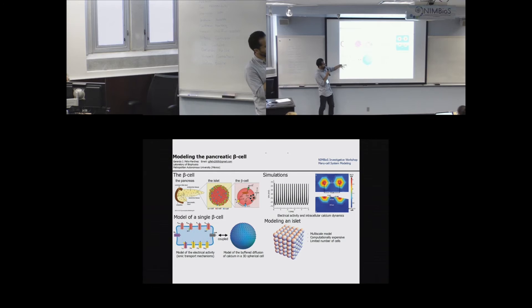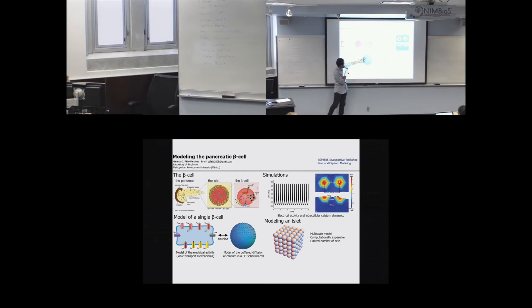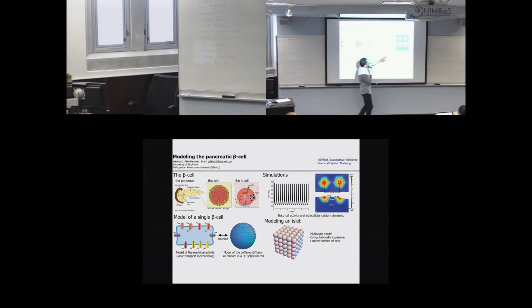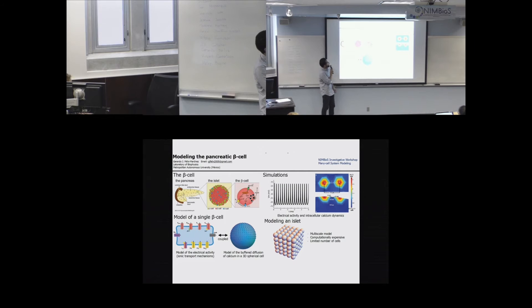Using a 3D spherical cell, we incorporate the morphological aspects of the cell, including how channels are distributed over the cell membrane. This lets us get a better estimate of calcium increase near the membrane. This electrical pattern is produced by our model, showing how calcium increases near two point sources in the membrane.